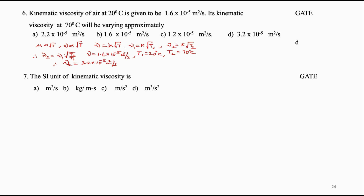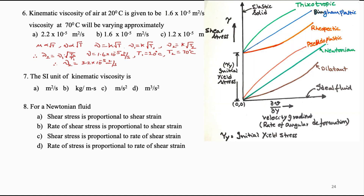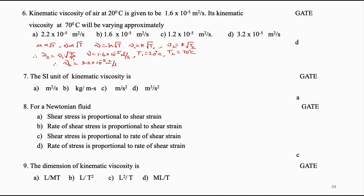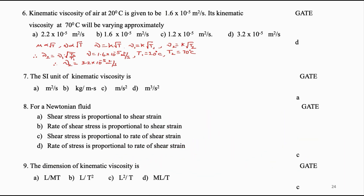The SI unit of kinematic viscosity is: (A) m²/s, (B) kg/m·s, (C) m/s², (D) m³/s². Answer is A. For a Newtonian fluid, shear stress is proportional to: (A) shear strain, (B) rate of shear stress to shear strain, (C) rate of shear strain, (D) rate of shear stress to rate of shear strain. Answer is C. The dimension of kinematic viscosity is: (A) L/MT, (B) L/T², (C) L²/T, (D) ML/T. Answer is C — L²/T.